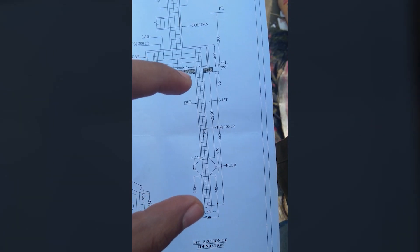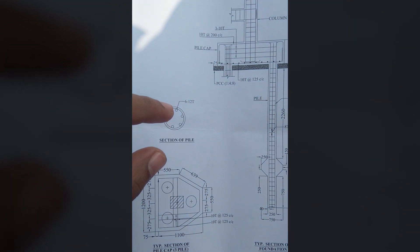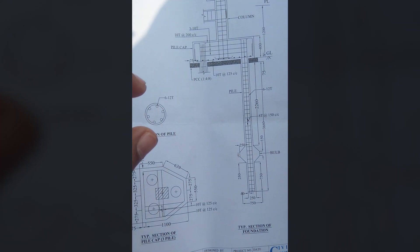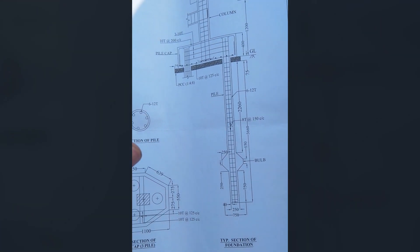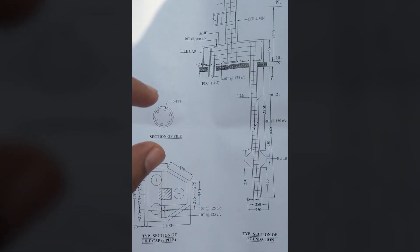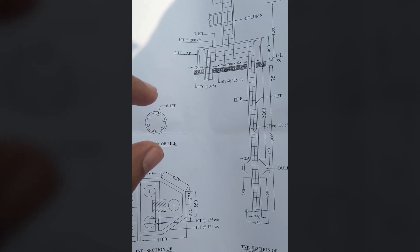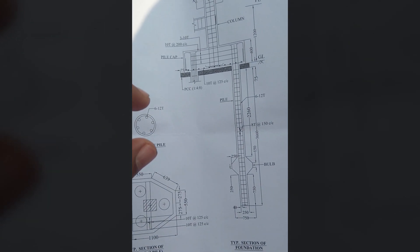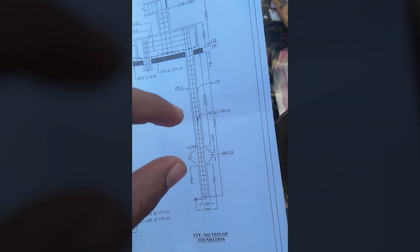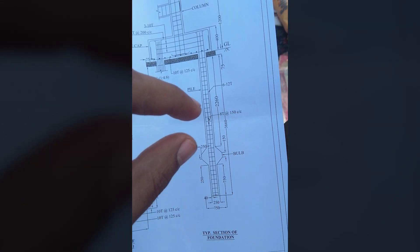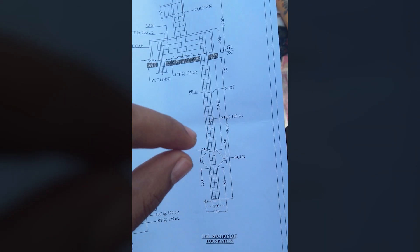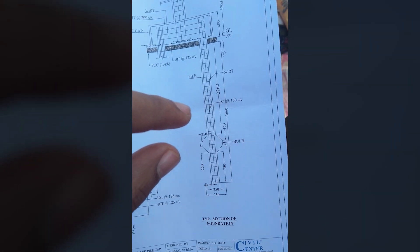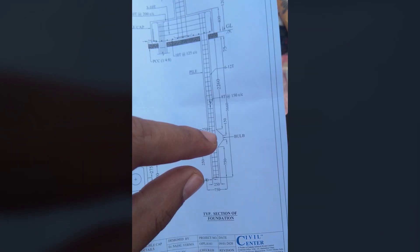The reinforcement used in the pile consists of 6 bars of 12 mm diameter. As per IS 456, the minimum reinforcement in circular structural members — whether column or pile — must be a minimum of six bars. One mistake many contractors make is providing only four bars for easy casting, but a minimum of six is required. The ties are 8 mm and are placed at a center-to-center distance of 150 mm.